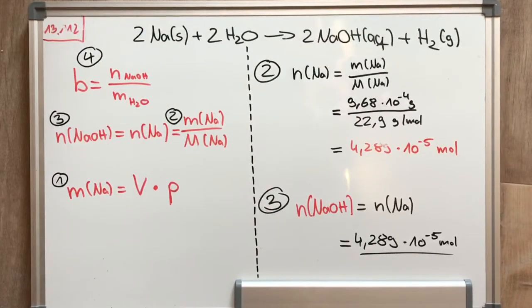In the second step, you calculate the molar amount of sodium with the mass we calculated in the step before, divided by the molar mass of sodium, which is 22.9 g/mol. And this is 4.289 × 10^-5 mol.